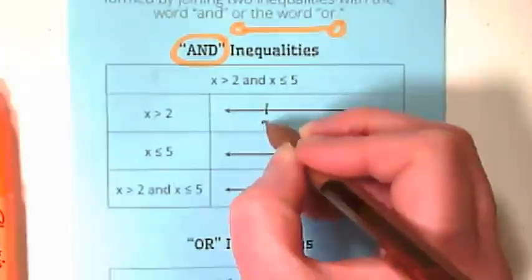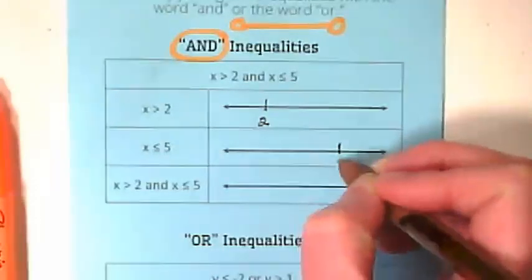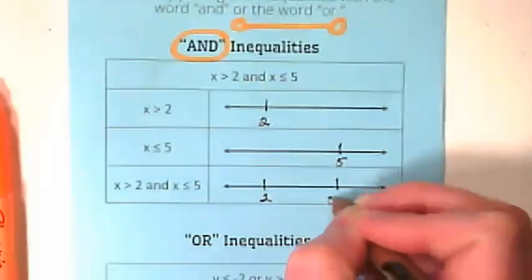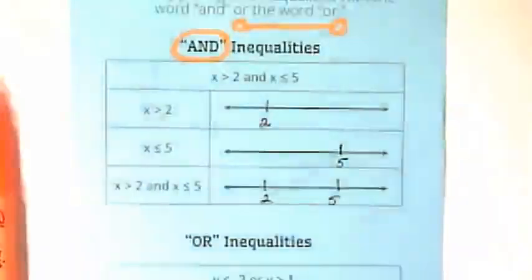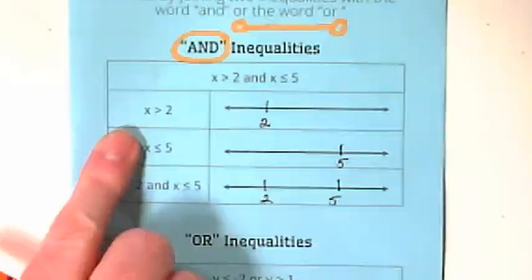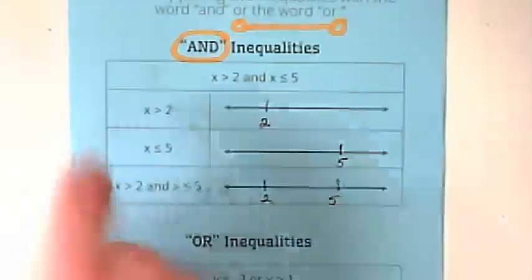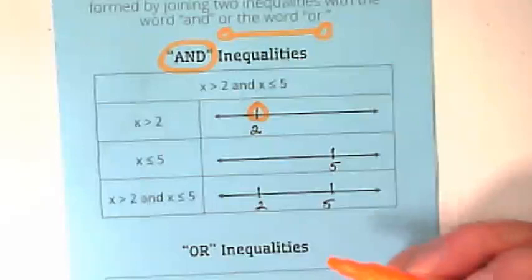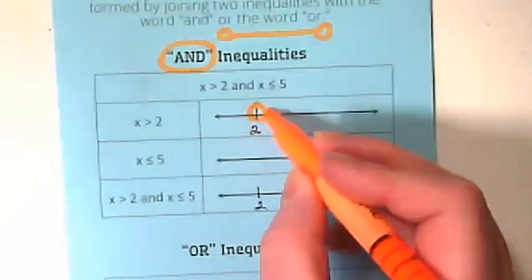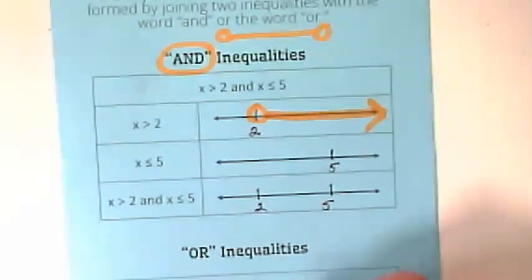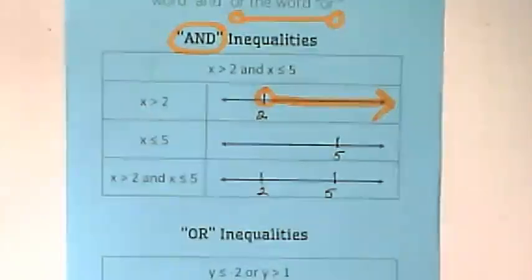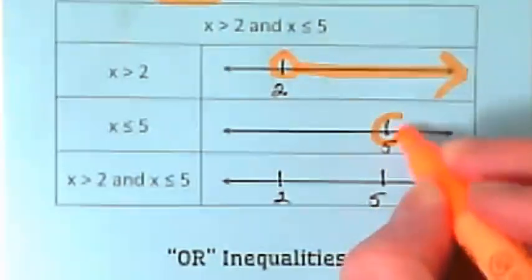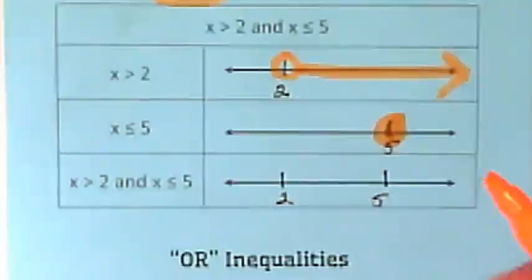So we're going to start off with 2 here and 5 here. And on the bottom graph, we're going to do 2 and 5. If I'm graphing x is greater than 2, I'm going to circle the 2. Open or closed? Open. And which direction does the line go? Right. Yep. Greater than 2. For our next inequality, we have x is less than or equal to 5. What's going to be true about the circle then? Closed circle. Closed circle and arrow to the left.